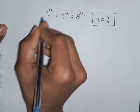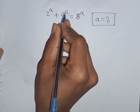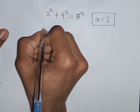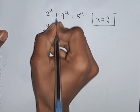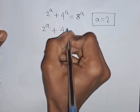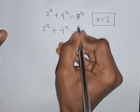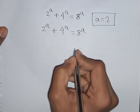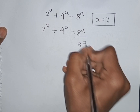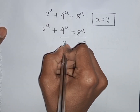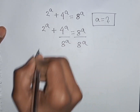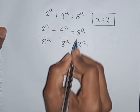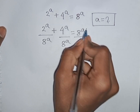How to solve 2 power a plus 4 power a is equal to 8 power a. Find the value of a. We have 2 power a plus 4 power a is equal to 8 power a. Now we divide both sides by 8 power a, so divided by 8 power a on both sides. This 8 power a will be cancelled on the right side.